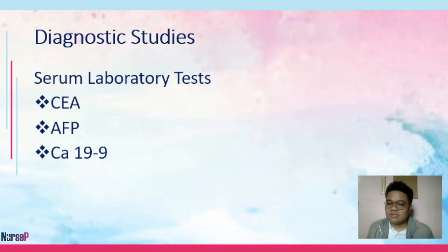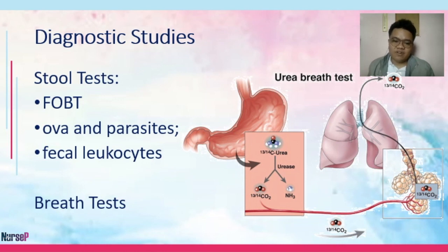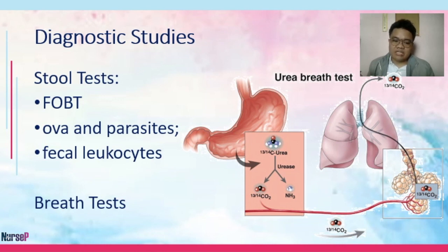For stool examinations, one test is the fecal occult blood test, also known as the guaiac test — named after the compound guayac used in the test. It checks for the presence of blood, and would be positive if your patient has bleeding from the stomach or intestines.